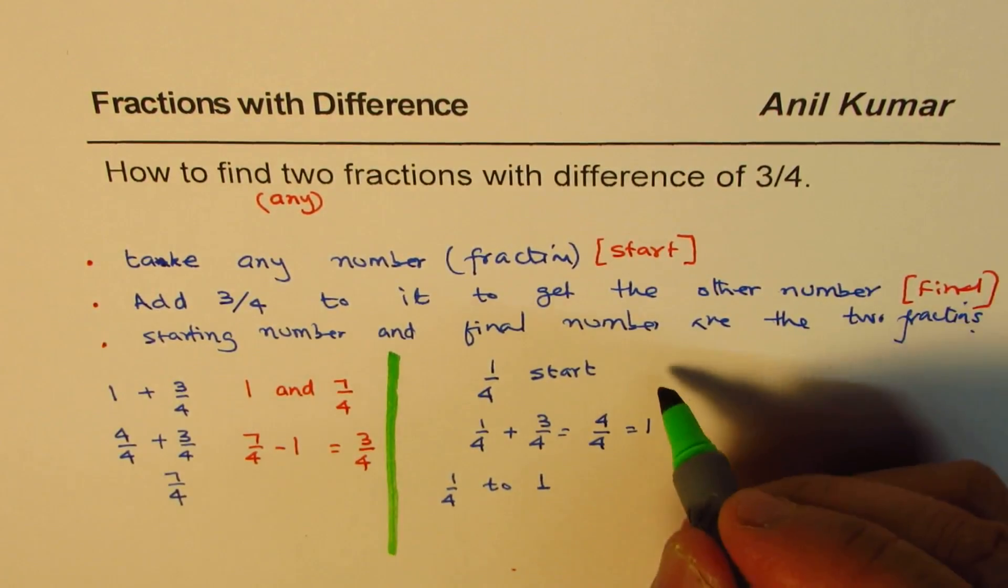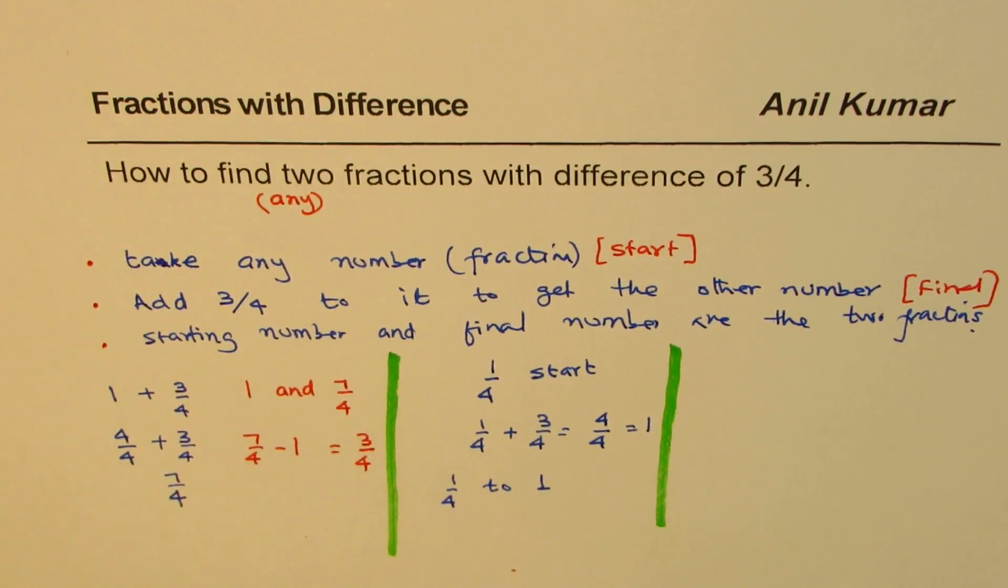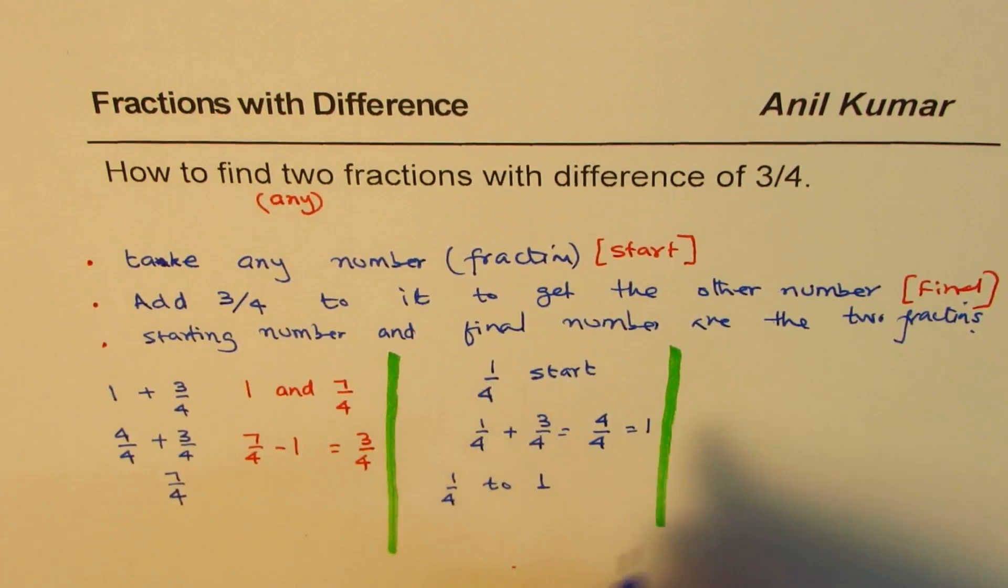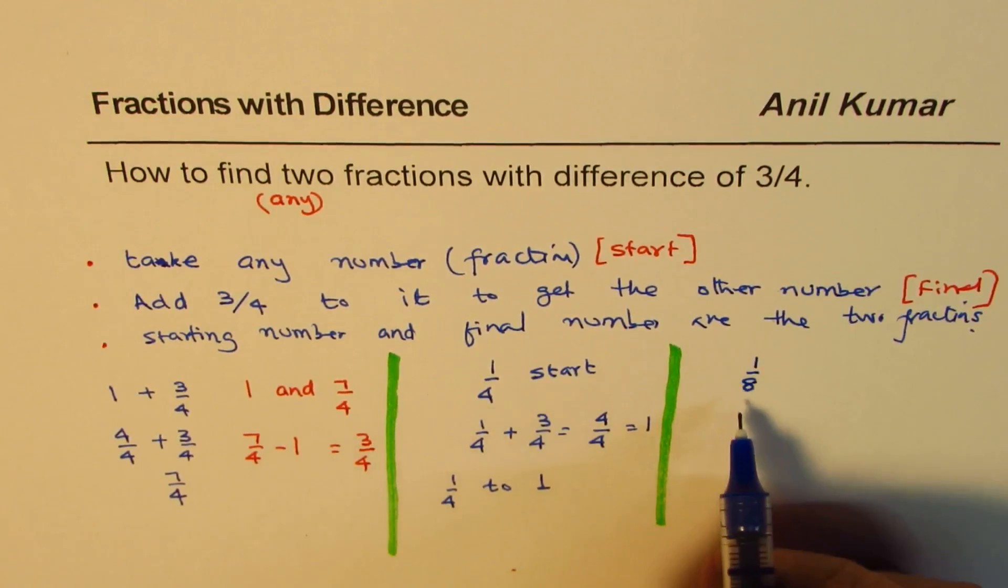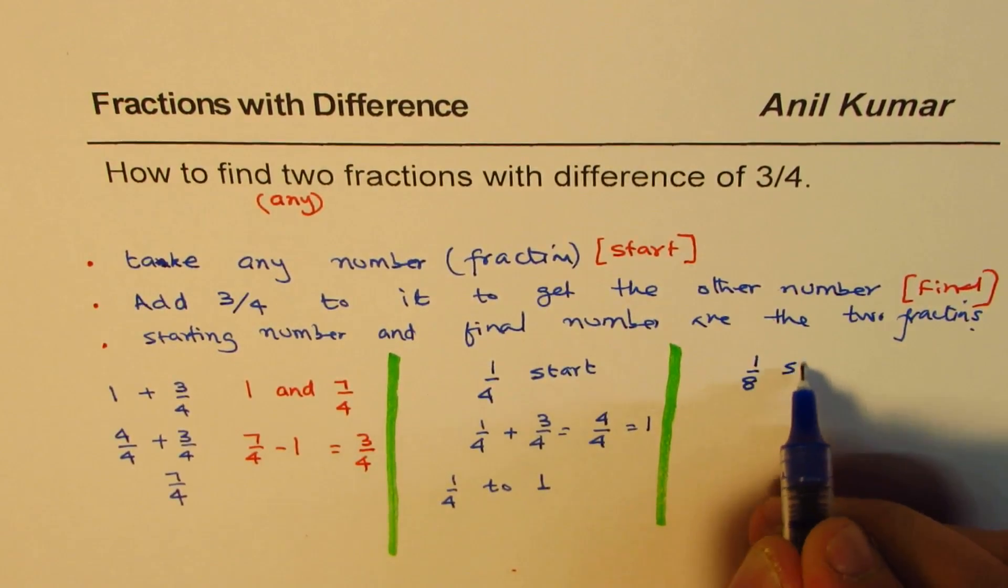Some are not satisfied since again I got 1 as my answer. So, this time what I will do is I'll start with a number, let's say 1 out of 8. So, if I start with 1 out of 8, that is the starting number.